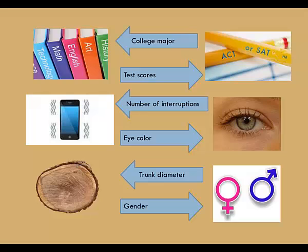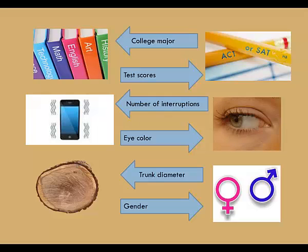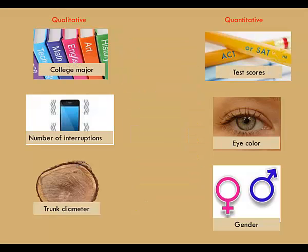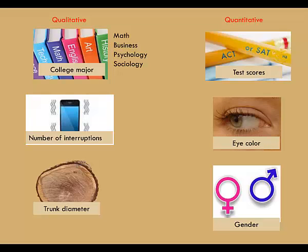Here I have six variables to classify: college major, test scores, number of interruptions, eye color, trunk diameter, and gender. It is helpful to imagine some of the variable values — just make up some data. Say you ask four college students their major: Math, Business, Psychology, and Sociology. These aren't numeric values, so this cannot be a quantitative variable. These values categorize the students, so college major is a qualitative variable. What about test scores? Suppose we are interested in SAT scores — a list of values might be numeric. If you average the numbers, you get 582. Does it make sense to say the average test score was 582? Sure. So test score is definitely quantitative.